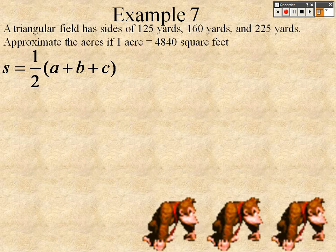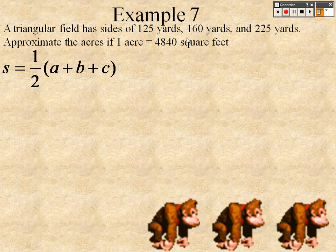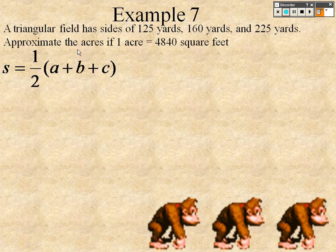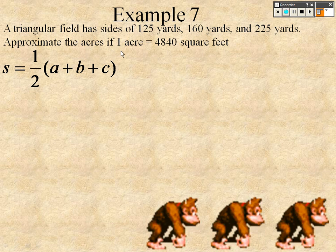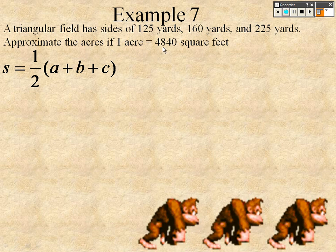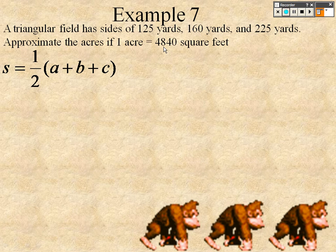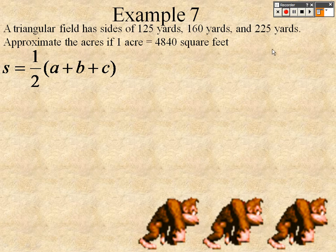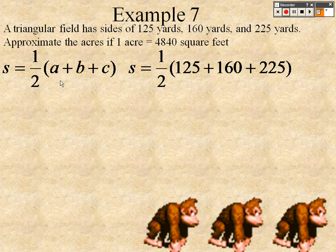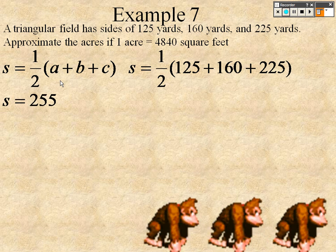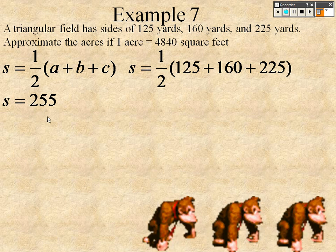But if you have a triangular field and the sides are 125, 160, and 225, approximate the acreage if one acre is 4840 square feet. So take all three sides, you add them together, and divide it by 2, basically. So we find out that S is 255.